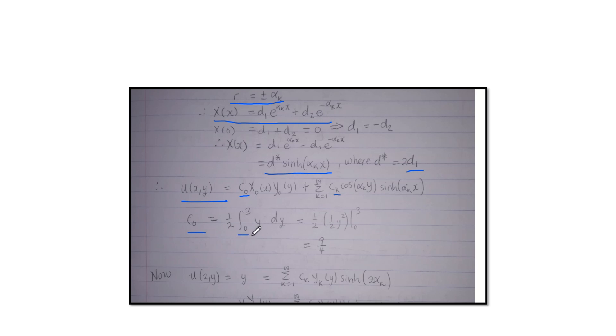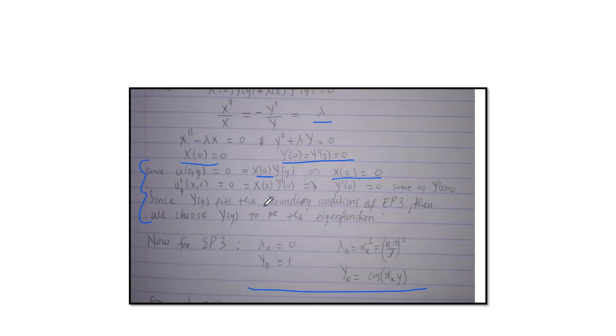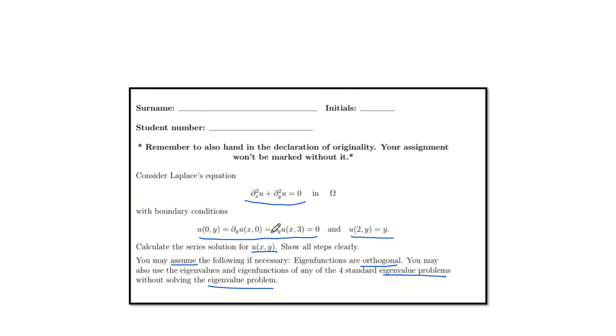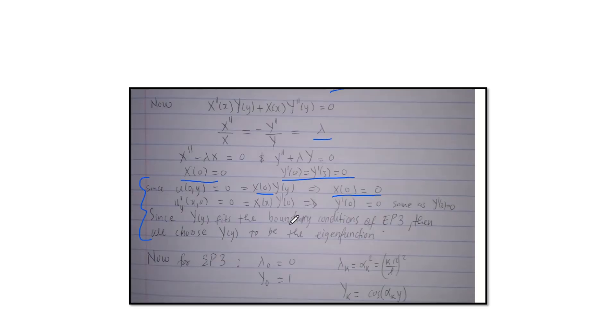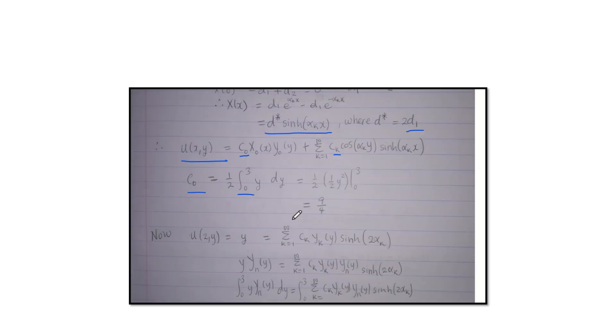So remember how to find your integral limits. You just look at this here, where X moves from zero to two. Look at Y, Y moves from zero to three. So we're integrating from zero to three. If we're dealing with X, it was going to be from zero to two. So since Y is our eigenfunction, so we're moving from zero to three. So I believe everybody should be comfortable with integration, so we find that as our C0.